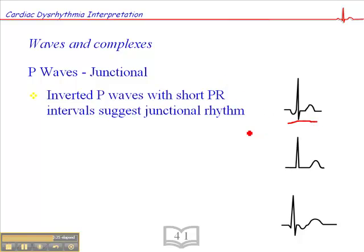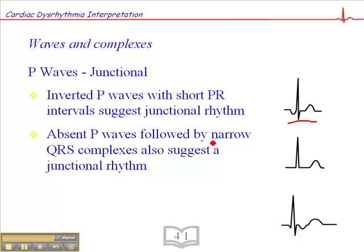If you saw absent P-Waves followed by a narrow QRS complex or simply a narrow QRS complex rhythm with no discernible P-Waves, that would also be a junctional rhythm. But the key here is that the QRS has to be narrow. If you don't see any P-Waves at all and the QRS is wide, then we have to assume that the QRS is wide because the impulse is originating from the ventricles.